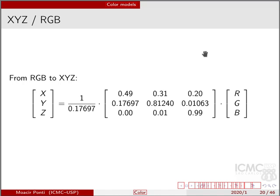XYZ is a system that we can convert to RGB and back, and this is only to show you that this can be done using a linear operation.